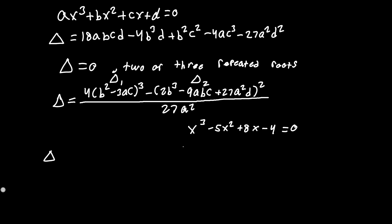For the cubic x³ - 5x² + 8x - 4 = 0, we check if it has a triple or double repeated root by testing b² = 3ac. With b = -5, we get b² = 25, and 3(1)(8) = 24. Since 25 ≠ 24, the cubic does not have a triple repeated root.